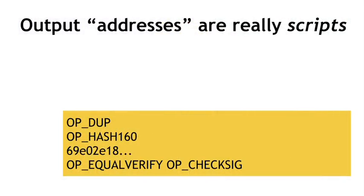To understand scripts, the easiest way is by an example. We'll take as an example the most common script in Bitcoin, which is to redeem a previous transaction by signing with the correct public key. This is what the output address would look like in that case — the output address is really a script. In this case the script is going to have four instructions. How does this script indicate who has the ability to spend these coins?